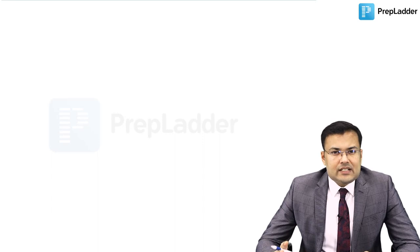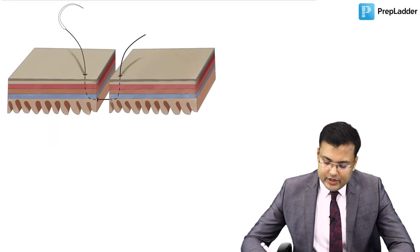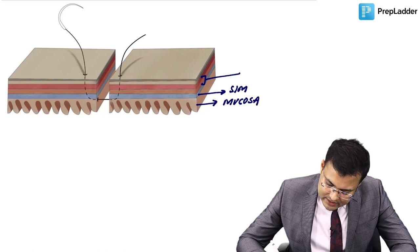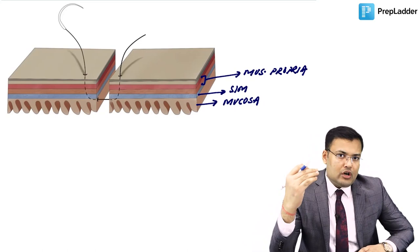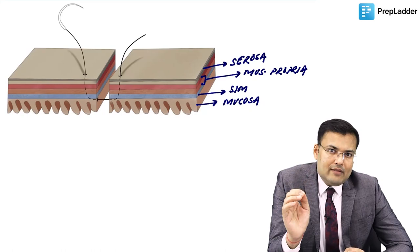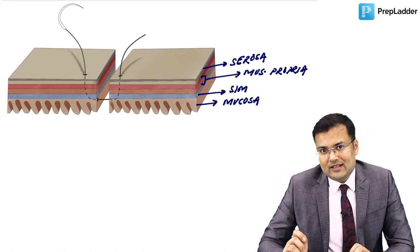Now discussing bowel anastomosis. The layers of bowel from inside out: mucosa, submucosa, muscularis propria (inner circular and outer longitudinal), and serosa. Two key principles in bowel anastomosis: first, submucosa must always be included because it has high collagen content and is the strongest layer. Second, the anastomosis should be inverted to prevent anastomotic leak.